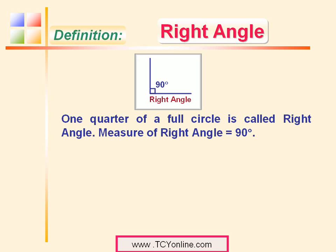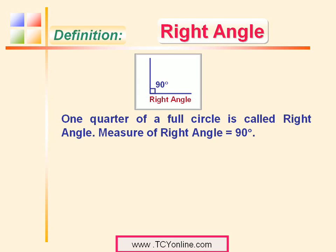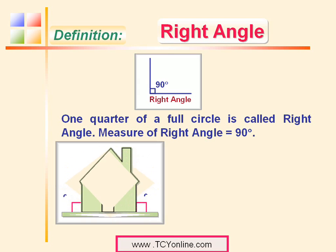Let's look at an example of a right angle. Suppose there is a building standing on the ground. This building makes an angle of 90 degrees with the ground, so these are right angles.